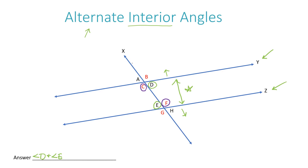It's kind of like if this transversal line continued and you kept going with letters, you'd see a pattern — alternating across the transversal line: left side of the line, then right side, then left side, then right side. That's where the word alternate comes from. So you get one angle from the left side of the transversal and one from the right side. Another answer you could list is angle C and angle F.